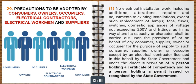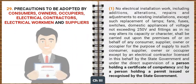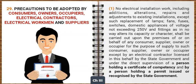Now let's understand the general safety requirements for precautions to be adopted by consumers, owners, occupiers, electrical workmen and suppliers. No electrical installation work including additions, alterations, repairs and adjustments to existing installations — except such replacement of lamps, fans, fuses, switches, domestic appliances of voltage not exceeding 250 volts and fittings as in no way alters its capacity or character — shall be carried out upon the premises of or on behalf of any consumer, supplier, owner or occupier, except by an electrical contractor licensed in that behalf by the state government and under the direct supervision of a person holding a certificate of competency, and by a person holding a permit issued or recognized by the state government.